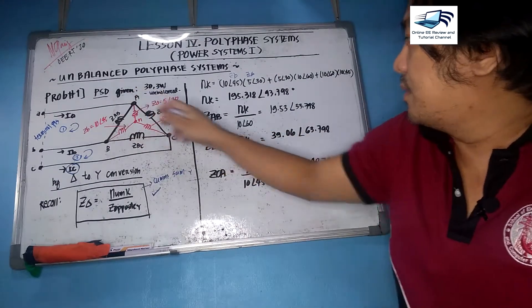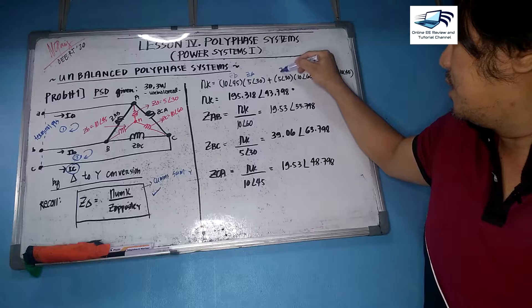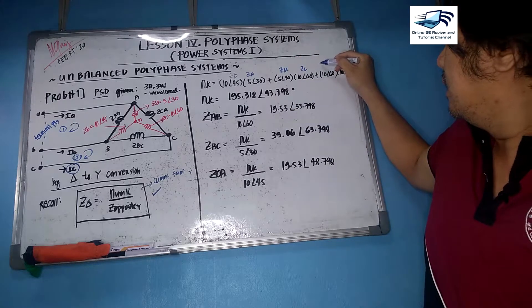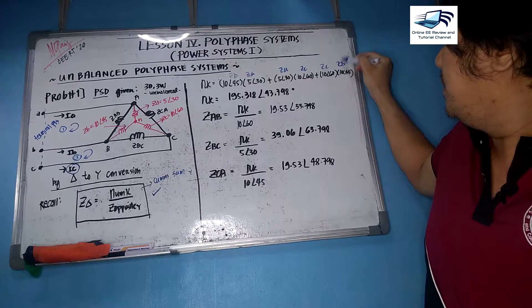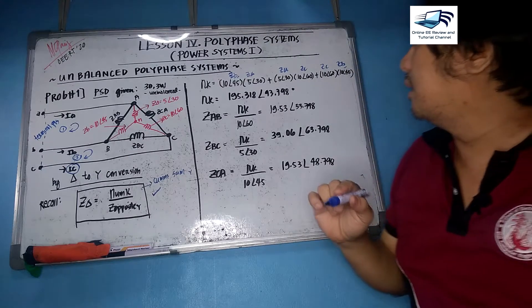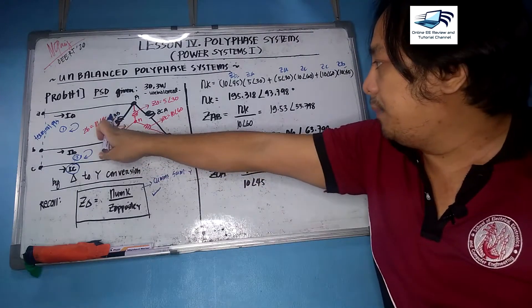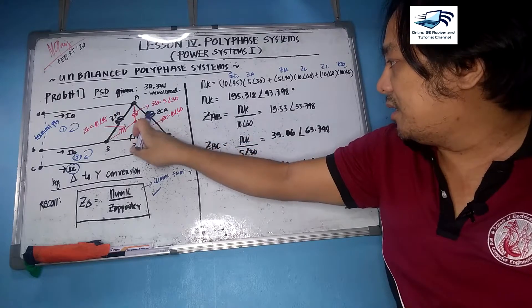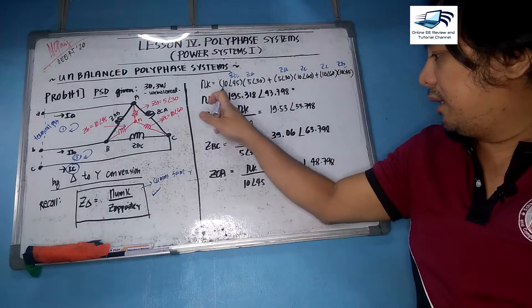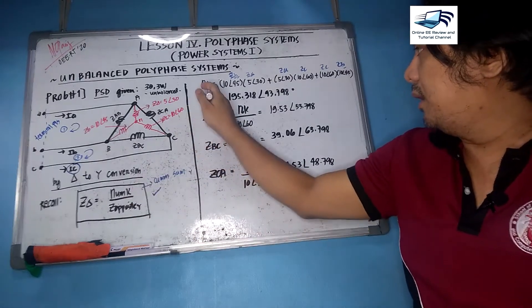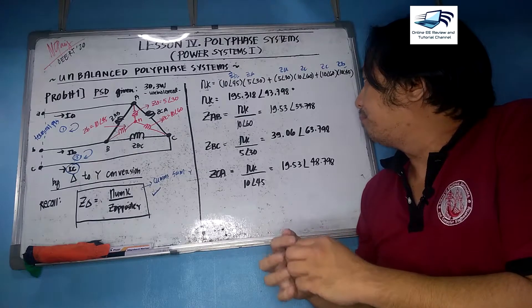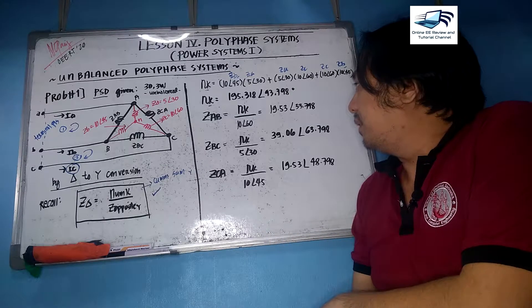Going in a clockwise direction: ZB multiplied by ZA, then ZA multiplied by ZZ, then ZZ multiplied by ZB — where you start is the variable you end on. That gives your numerical constant NK. The answer is 195.318∠93.798°.